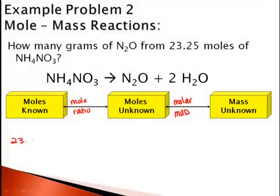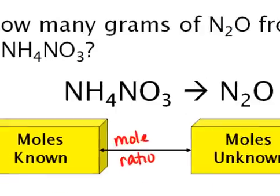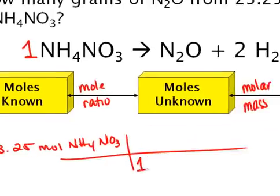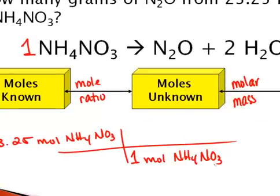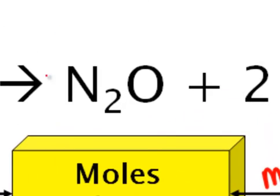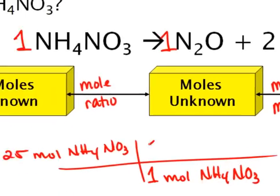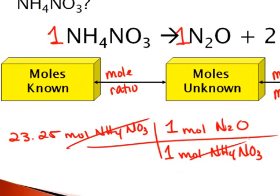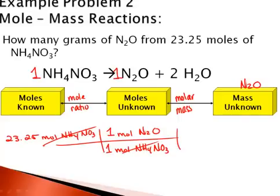We take our 23.25 moles of NH4NO3. From our balanced equation, we see that there's one mole of NH4NO3. We want to go eventually to mass of our N2O, so we need our moles of N2O first. We see that there's one mole of N2O, so moles of NH4NO3 cancel out. Now our last step is the molar mass of N2O — so one mole of N2O.